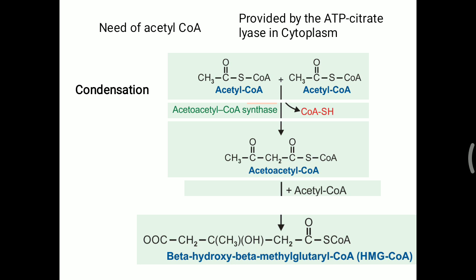One more acetyl-CoA molecule attaches to acetoacetyl-CoA to produce HMG-CoA. The full form of HMG is beta-hydroxy-beta-methylglutaryl-CoA, and the enzyme needed is HMG-CoA synthase. These initial two reactions — acetoacetyl-CoA synthase and HMG-CoA synthase — are similar to ketone body formation.